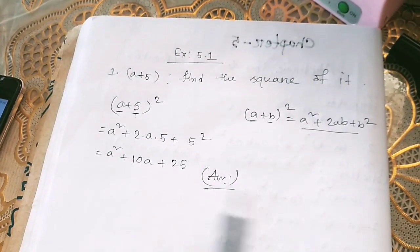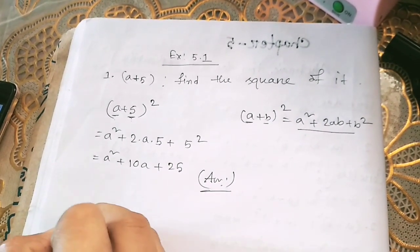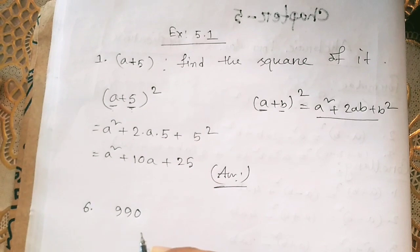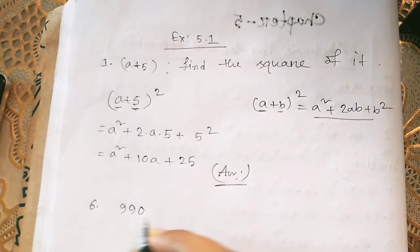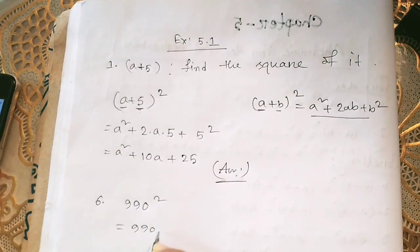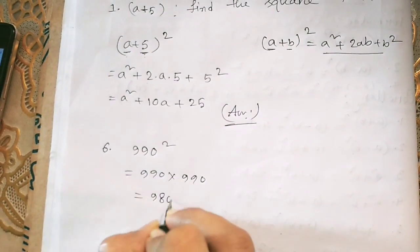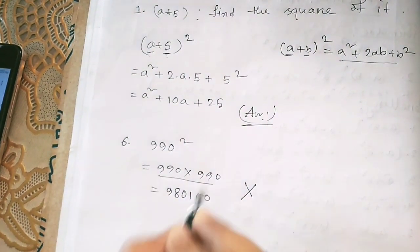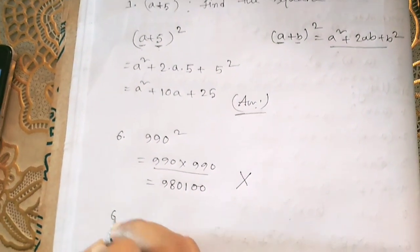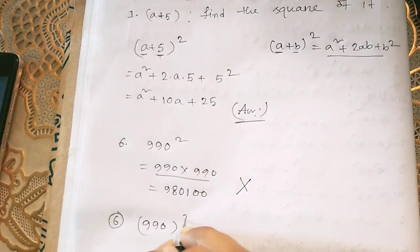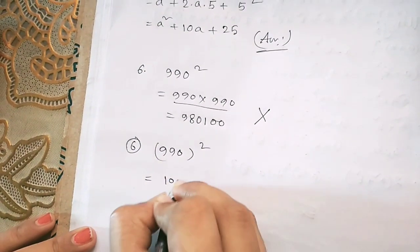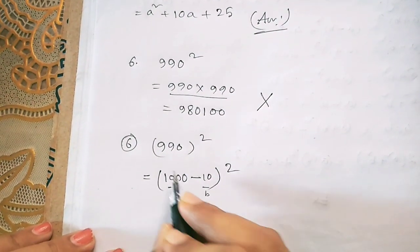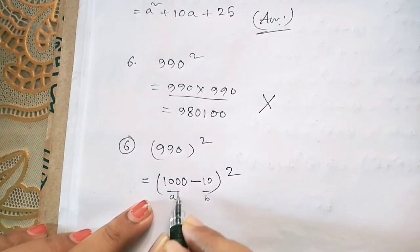Now I am going to solve another problem from this chapter which is number 6. In number 6 they are given the number 990. We have to find the square of 990. We could write it as 990 × 990 and the answer is 980100, but that is wrong because there is no use of formula. We are asked to find the square with the help of formula, so we will write 990 as 1000 minus 10. If we subtract 10 from 1000 we get 990.